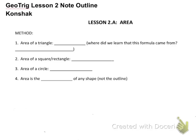Okay, GeoTrig, this is lesson two. We're going to start off by talking about areas, and some of these we already talked about or should know. What's the area of a triangle? Half the base times height. So, let's write that in there, one-half base times height.